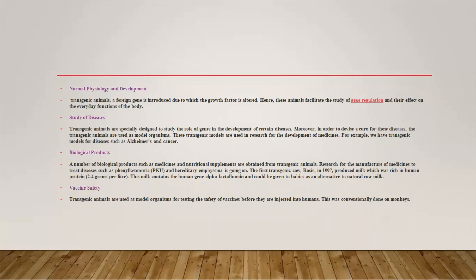Another application is the study of diseases. Transgenic animals are specially designed to study the role of genes in the development of certain diseases. In order to devise a cure, transgenic animals are used as model organisms. These transgenic models are used in research for the development of medicines — for example, transgenic models for diseases such as Alzheimer's and cancer.